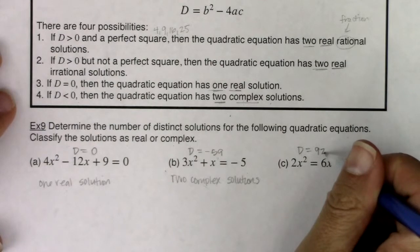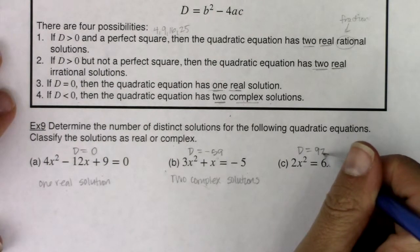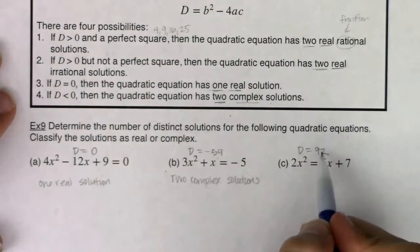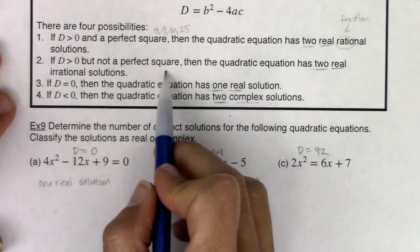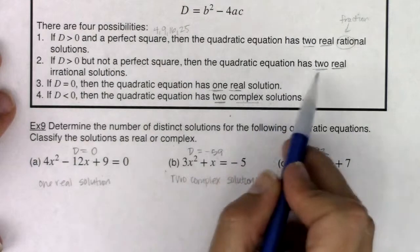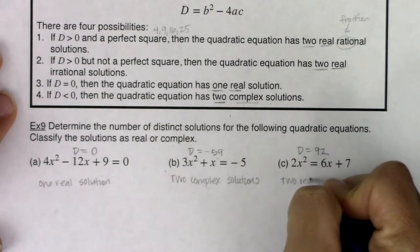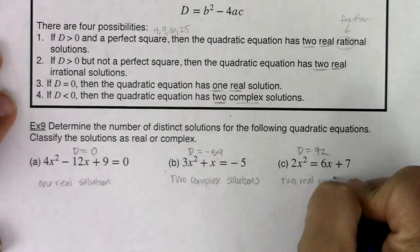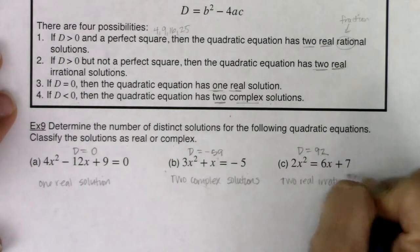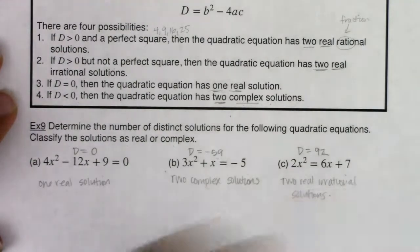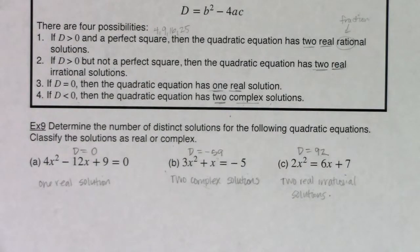When my discriminant is positive, I have to decide was it a perfect square or not a perfect square. Well, 92 is not a perfect square, so I'm going to have two real irrational solutions.